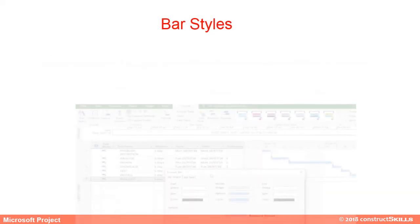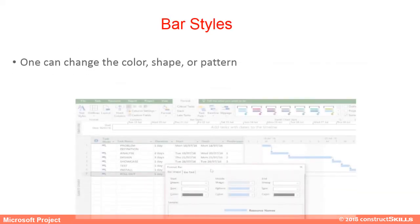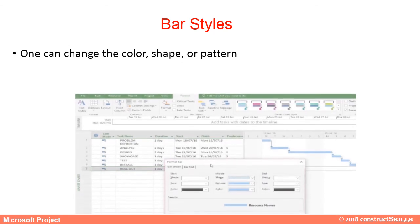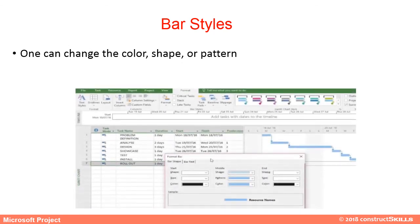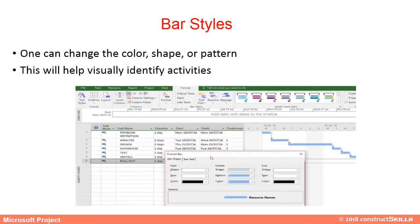Bar styles allow you to change the color, shape, or pattern of a bar in the Gantt chart. This helps visually identify different activities.